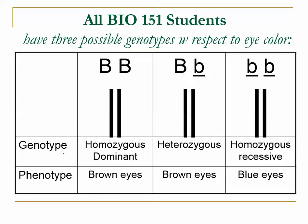A couple more points. If someone shows the recessive trait — for example, this person is showing blue eyes — you automatically know their genetic makeup. You automatically know their genotype, because only a person with the genotype homozygous recessive will show the phenotype of blue eyes. This applies to any recessive trait, whether it's white skin, blue eyes, or straight hair. If someone shows the recessive trait, you automatically know they have to be homozygous recessive.